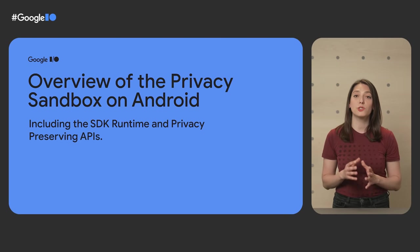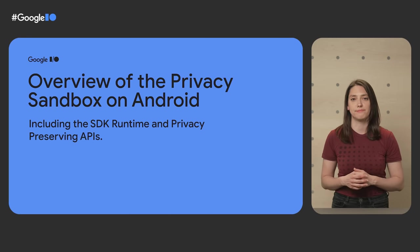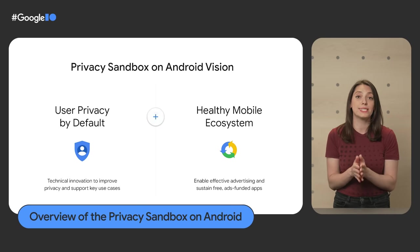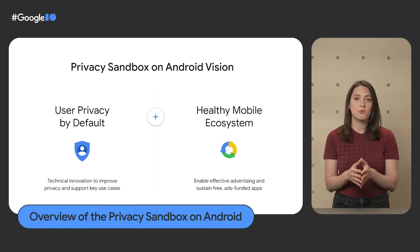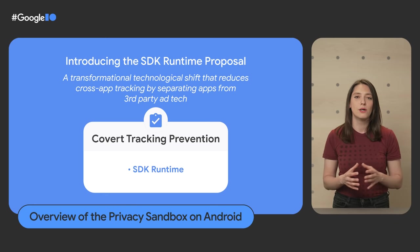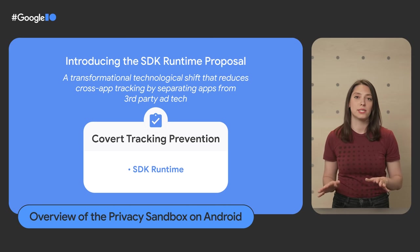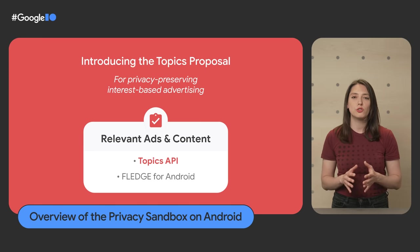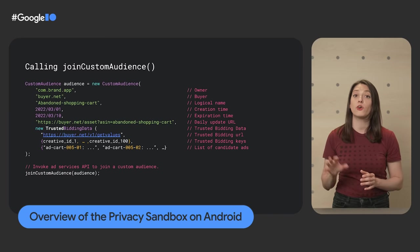We recently announced the Privacy Sandbox on Android — an initiative to introduce new, more private advertising solutions. Android has always sandboxed apps within separate processes, but all code in your app runs in the same sandbox with the same access to data, including third-party SDKs. In Android 13, we plan to introduce the SDK runtime to distribute, install, and run ad-related SDKs independently from apps to limit the data they can access. We also plan new privacy-preserving APIs for targeting user interests, managing custom audiences, and attribution reporting.